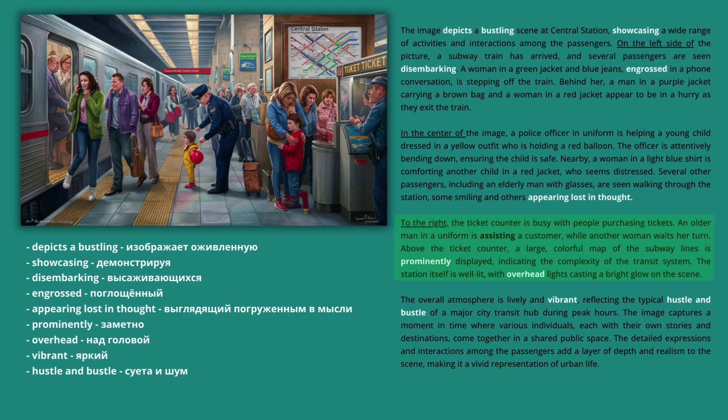To the right, the ticket counter is busy with people purchasing tickets. An older man in a uniform is assisting a customer, while another woman waits her turn. Above the ticket counter, a large, colorful map of the subway lines is prominently displayed, indicating the complexity of the transit system. The station itself is well-lit, with overhead lights casting a bright glow on the scene. The overall atmosphere is lively and vibrant, reflecting the typical hustle and bustle of a major city transit hub during peak hours.